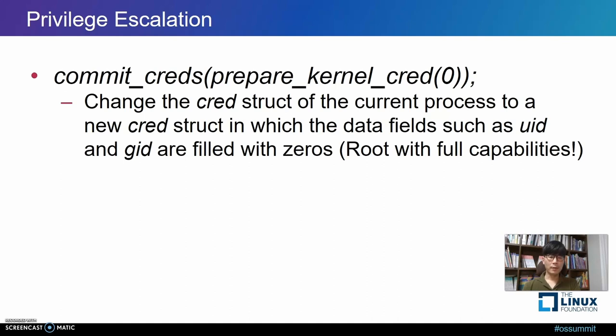The prepare_kernel_cred function takes zero as an argument and creates a root credential with all capabilities enabled. Then, the newly created root credential is referenced via the commit_creds function. As a result, an attacker process could gain root permissions along with a shared kernel vulnerability.